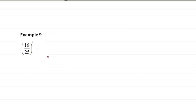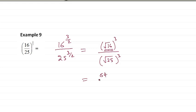Example 9. So we have 16 to the power 3 over 2 on the top, 25 to the power 3 over 2 on the bottom. This means we take the square root, then this 3 means we cube it. Similar here, dividing by 2 means take the square root, then the 3 means cube it. So this is 4 cubed. This is 5 cubed. So the answer is 64 divided by 125.